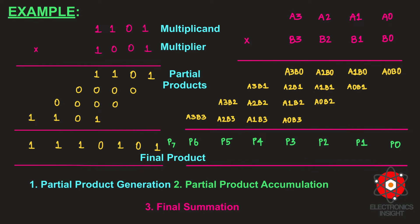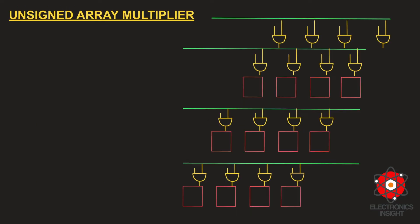Partial products exist only when the multiplier bit is 1. Therefore, careful optimization of partial product generation can lead to a reduction in area — that is, the hardware complexity associated with the unsigned array multiplier, which we'll address in the second part. After generating all partial products, they must be accumulated using an array of adders, hence the name array multiplier. The array multiplier uses an array of full adders and some half adders.